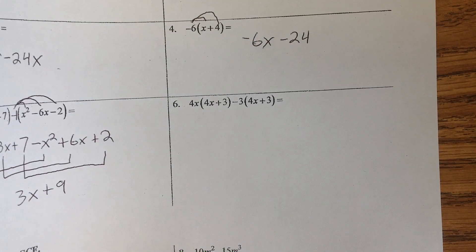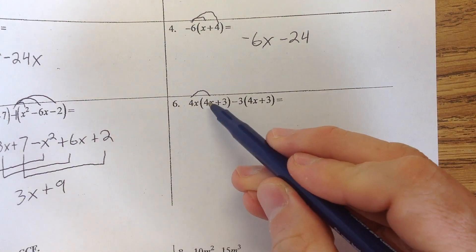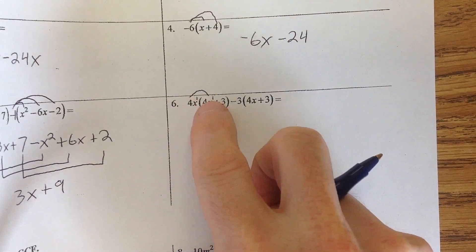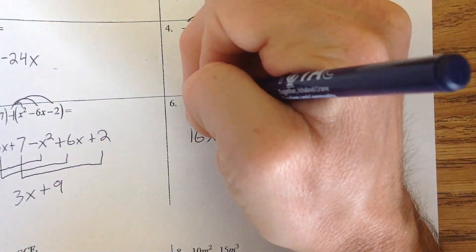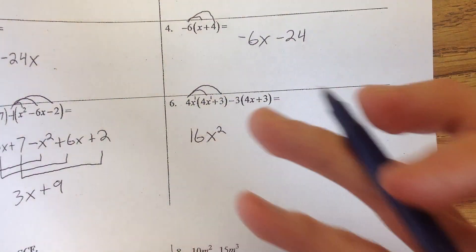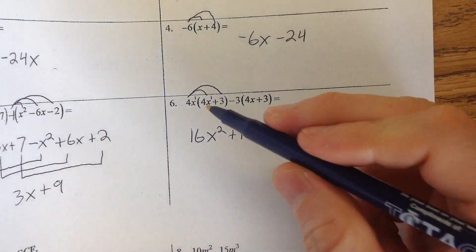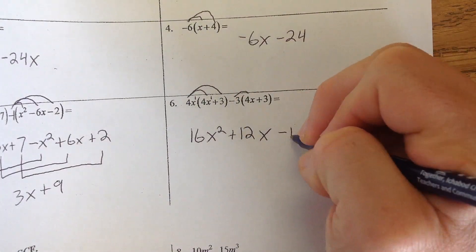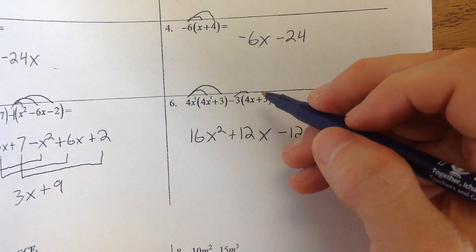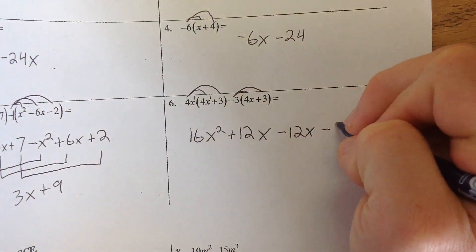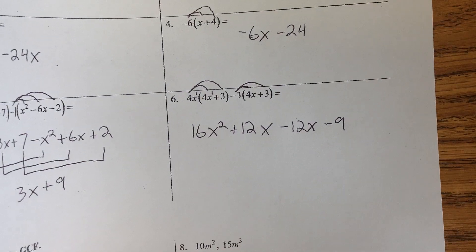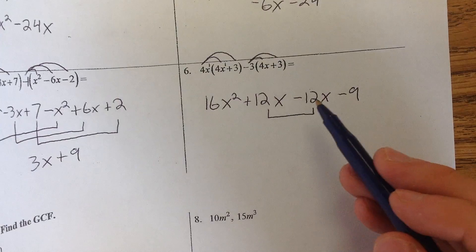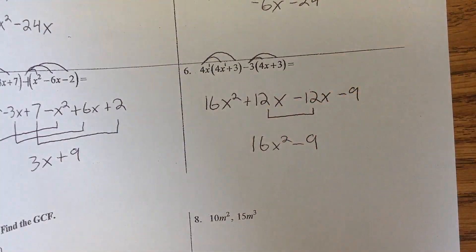Let's take a look at number 6 — again, more multiplication and distribution. 4 times 4 gives us 16, and x to the first times x to the first — adding exponents, 1 plus 1 — gives us x squared. Then 4x times 3: the 4 times 3 gives us 12, and the x just comes along. Negative 3 times 4 gives us minus 12, and the x stays the same. Negative 3 times positive 3 gives us negative 9. Nothing to combine with x squared. Positive 12 minus 12 cancels out, and we're left with 16x squared minus 9.